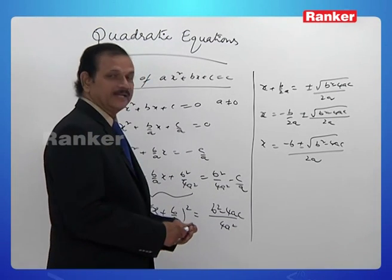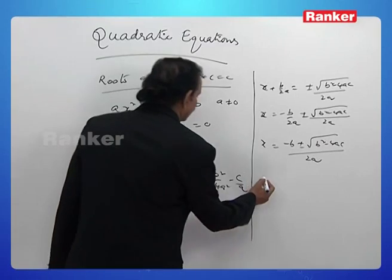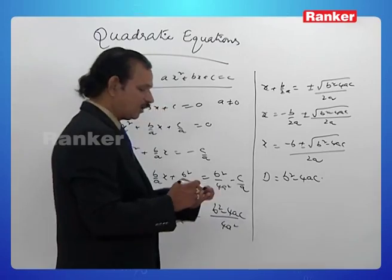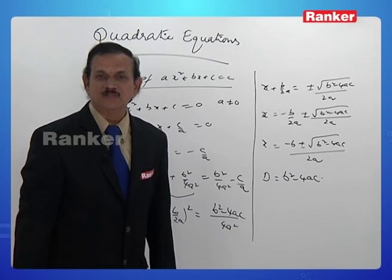It is generally denoted by capital D. That is, D equals b² minus 4ac, and it is called the discriminant of the equation.